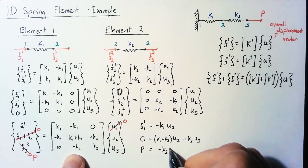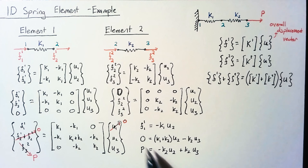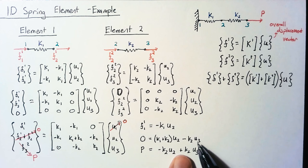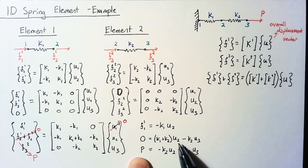So now we're going to take these equations and solve them. We're going to use these two equations to solve these displacements, either through matrix algebra, or there's a clever solution here where we can just add these two equations together. The K2U3s cancel out, and we're left with P equals K1 times U2.